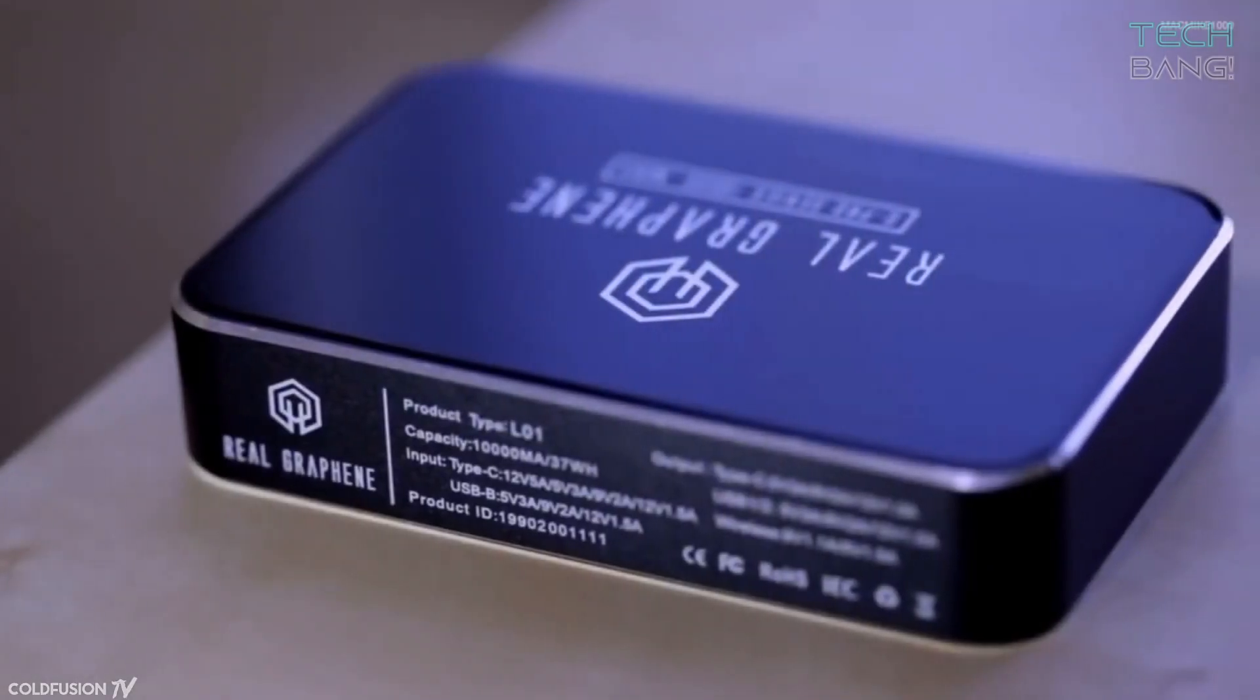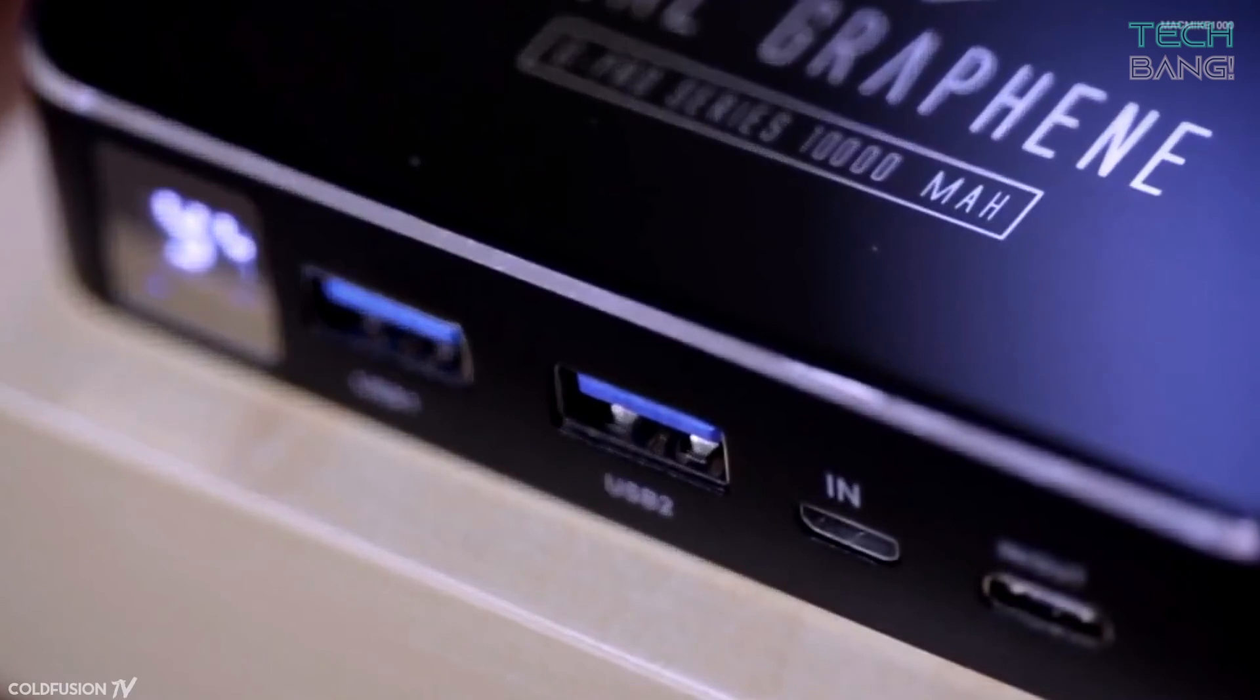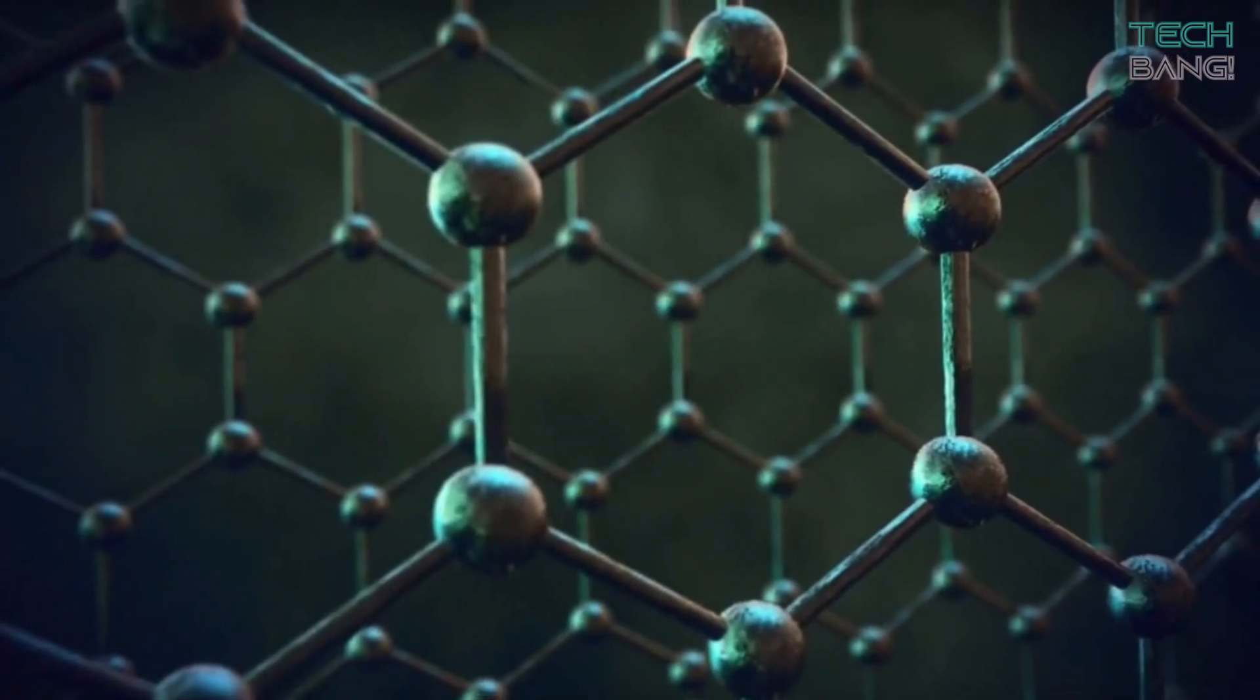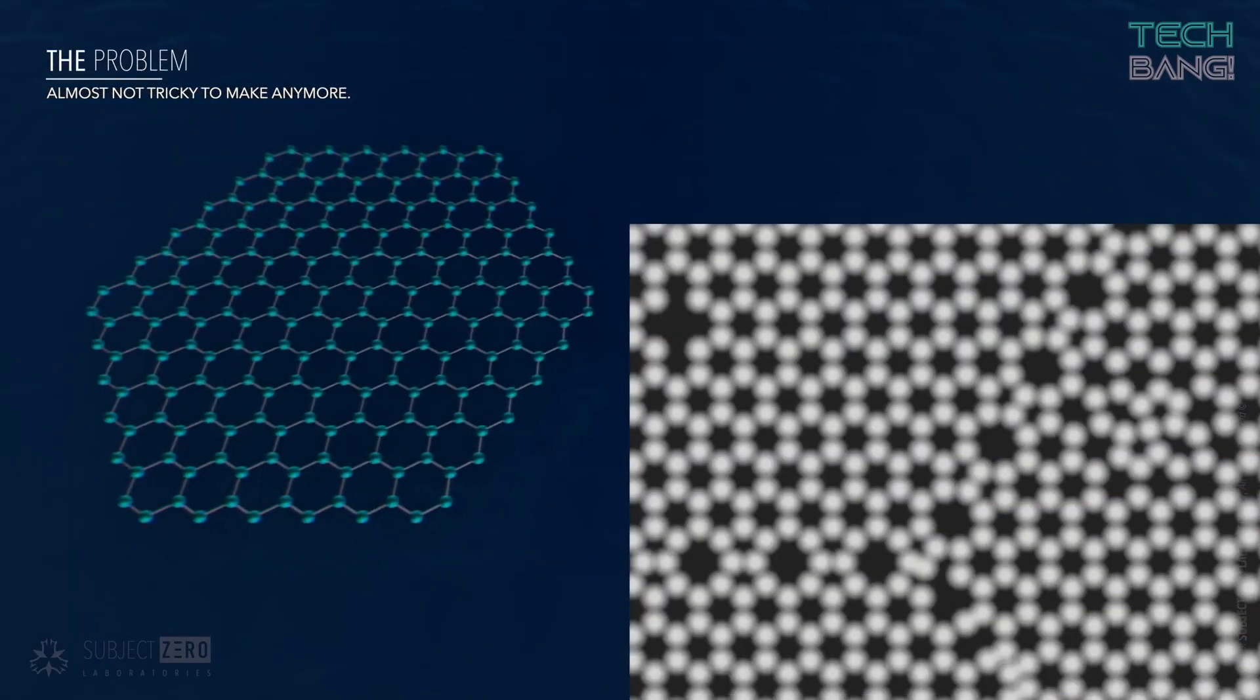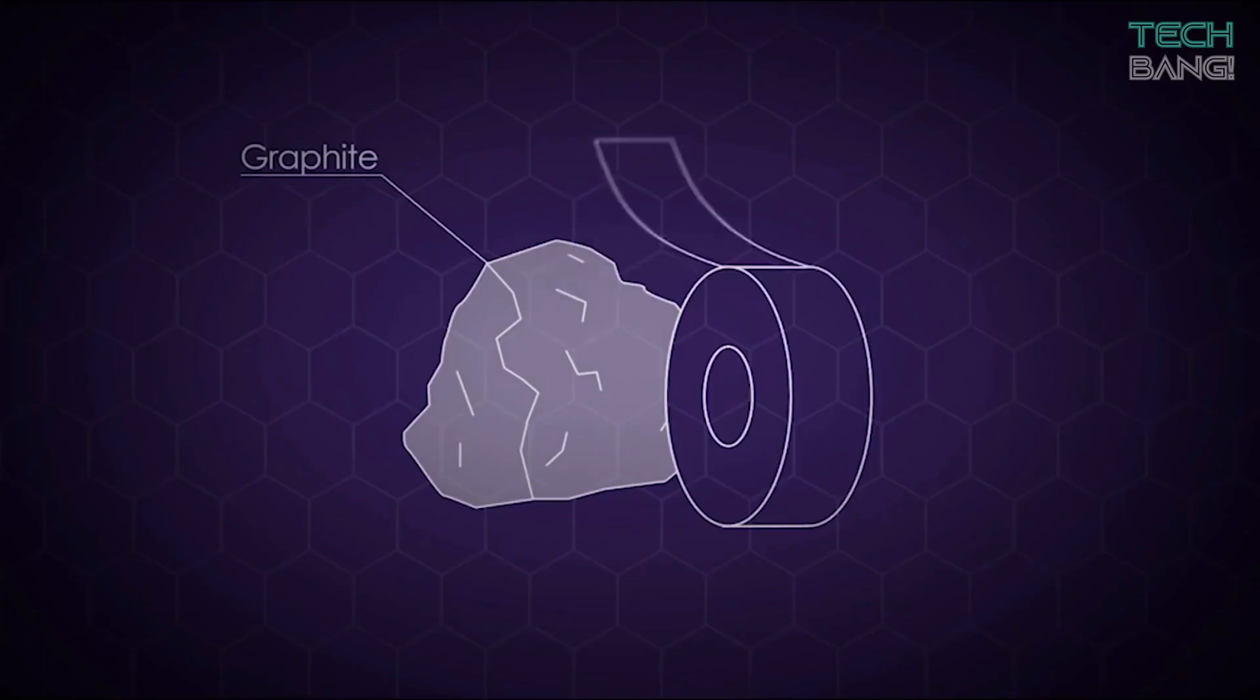Graphene batteries are also lighter and slimmer than today's lithium-ion cells. This means smaller, thinner devices or larger capacities without requiring extra room. Graphene is much more stable, flexible, and stronger, and is more resilient to overheating and overcharging.